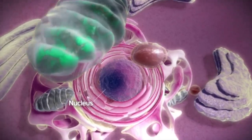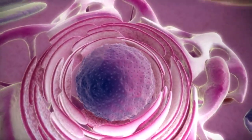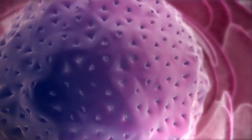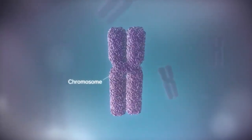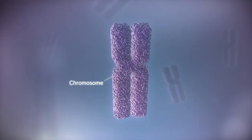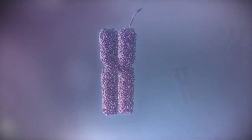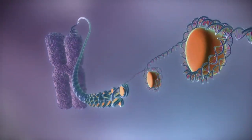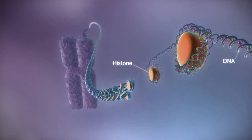The nucleus contains the genome. In humans, the genome is split between 23 pairs of chromosomes. Each chromosome contains a long strand of DNA, tightly packaged around proteins called histones.